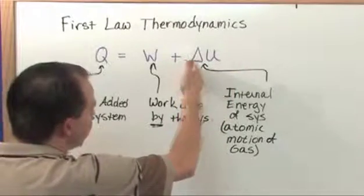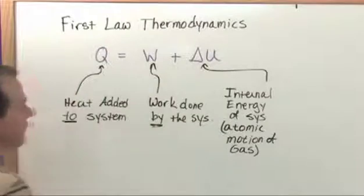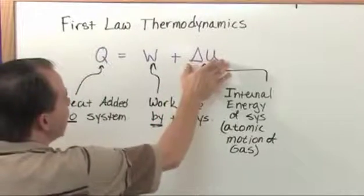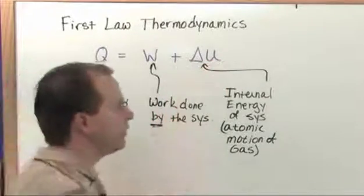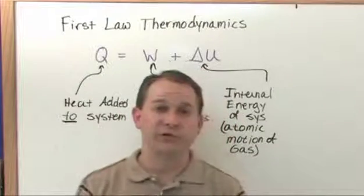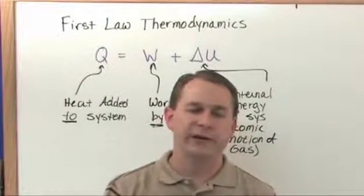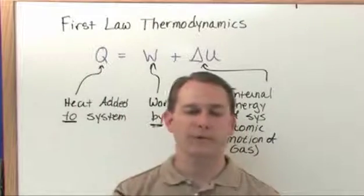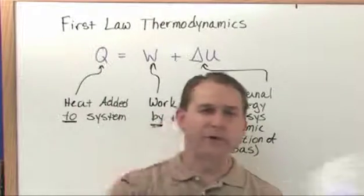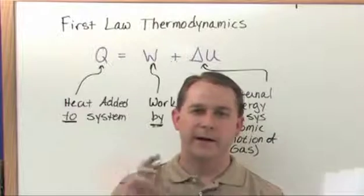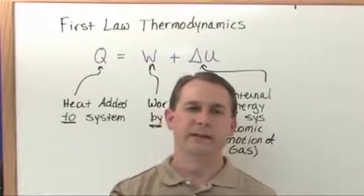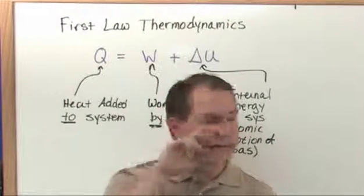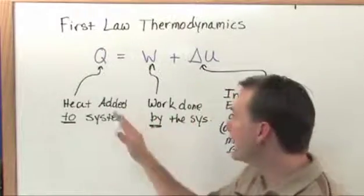So it's the final value of the internal energy minus the initial value of the internal energy. Delta U is how much the gas has changed its internal energy. You can think of that as like the temperature of the gas going up. Internal energy is just a phrase used to talk about how agitated the atoms are. If you heat a gas up, the atoms are going to be moving around a whole lot more vigorously.